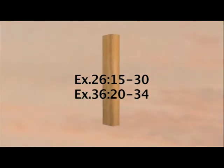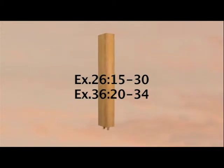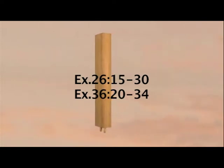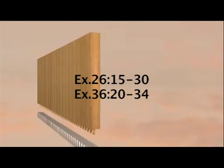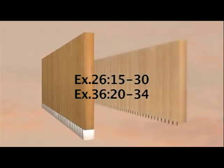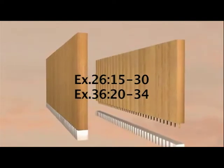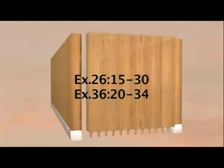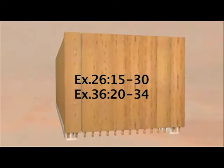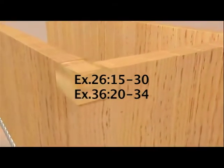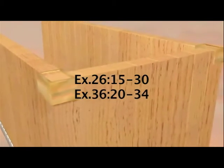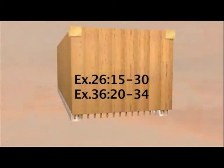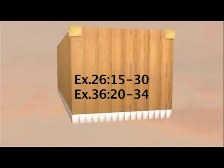The framework of the tabernacle will consist of frames made of acacia wood. Each frame must be fifteen feet high and two and a quarter feet wide. There will be two pegs on each frame so they can be joined to the next frame. Twenty of these frames will support the south side of the tabernacle, fitting into forty silver bases — two bases under each frame. On the north side there will also be twenty frames with their forty silver bases. On the west side there will be six frames, along with an extra frame at each corner, with eight frames total supported by sixteen silver bases.